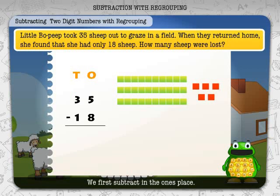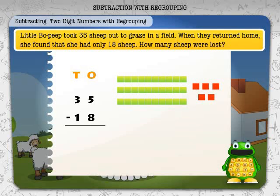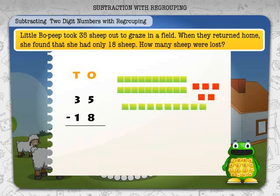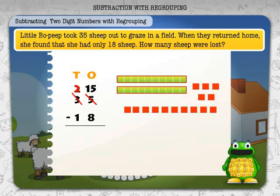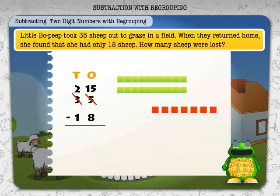We first subtract in the ones place. From five ones we need to take away eight ones, but we have only five. To get eight ones we must borrow one of the tens as ten ones. We now have 15 ones and two tens.